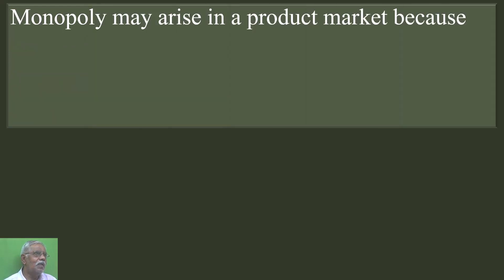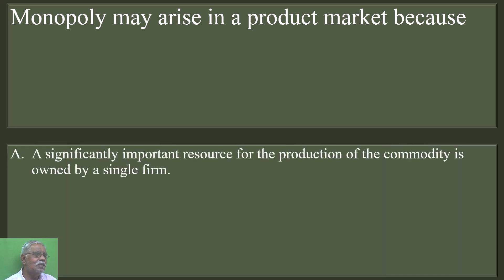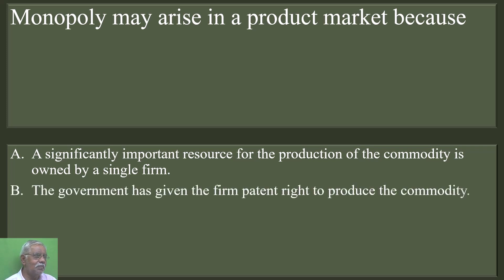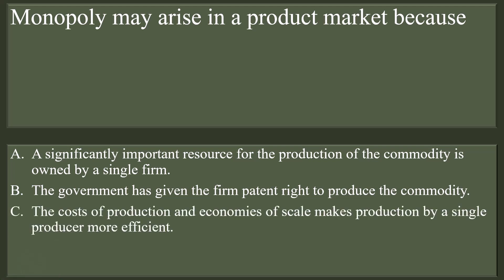Monopoly may arise in a product market because: a significantly important resource for the production of the commodity is owned by a single firm; the government has given the firm patent rights to produce the commodity; the cost of production and economies of scale make production by a single producer more efficient; or all of the above. Option D is the correct answer — all of the above.